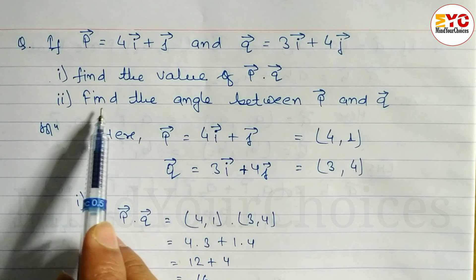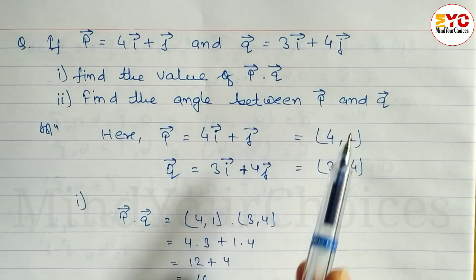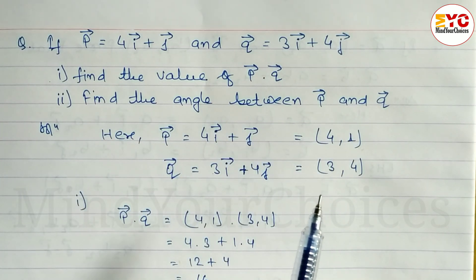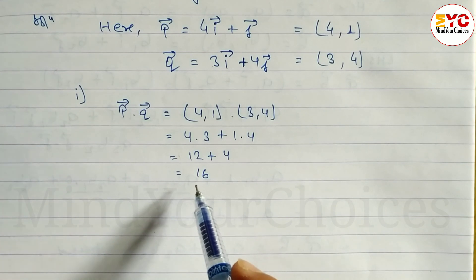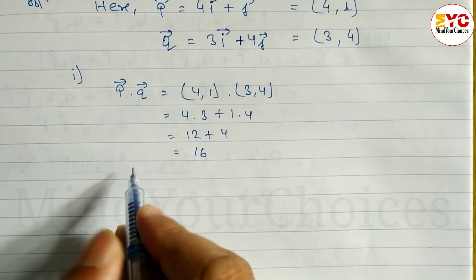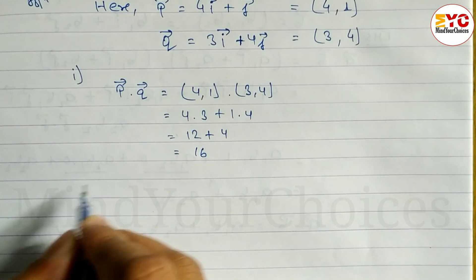Next, what we have to find out: Find the angle between P and Q. For scalar product we need magnitude. Already scalar product is done. Now we have to find out magnitude of P and Q.